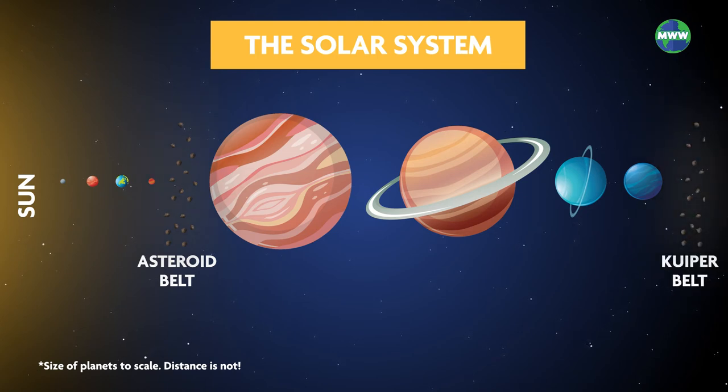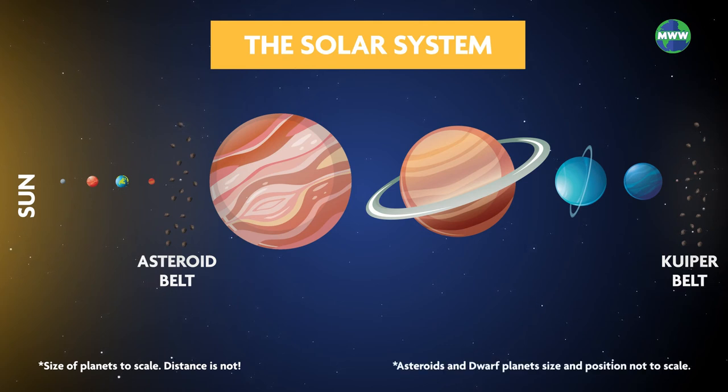We have five dwarf planets: Ceres, Pluto, Eris, Makemake, and Haumea. Ceres is the lone wolf residing in the asteroid belt, while all the other dwarf planets are within the Kuiper belt.